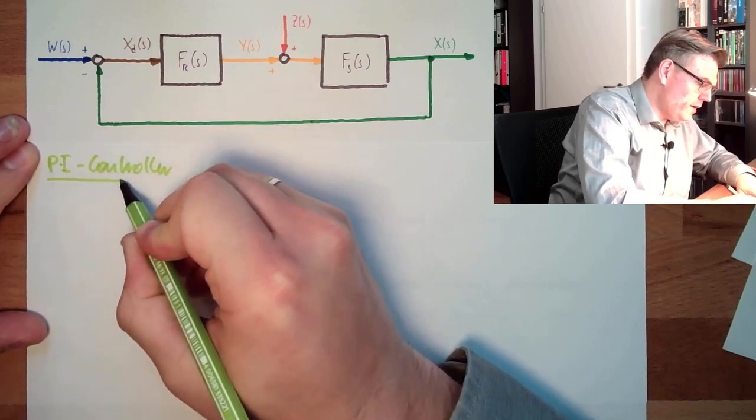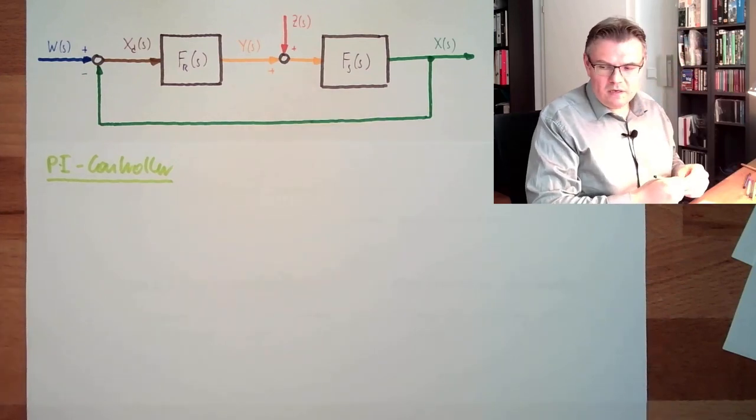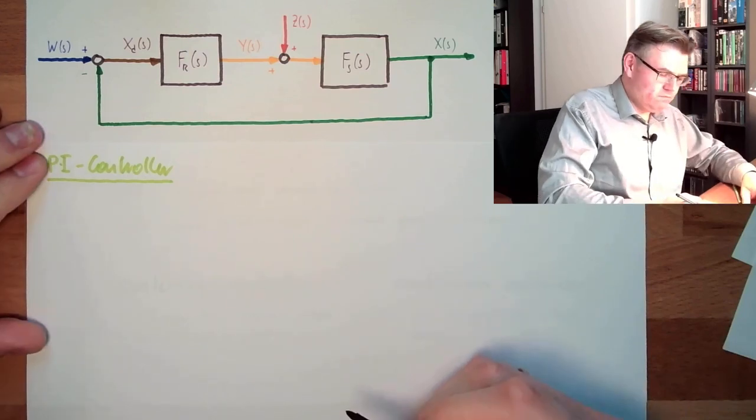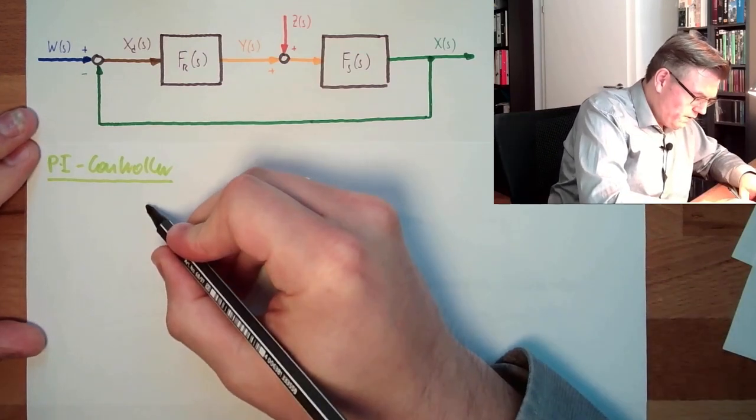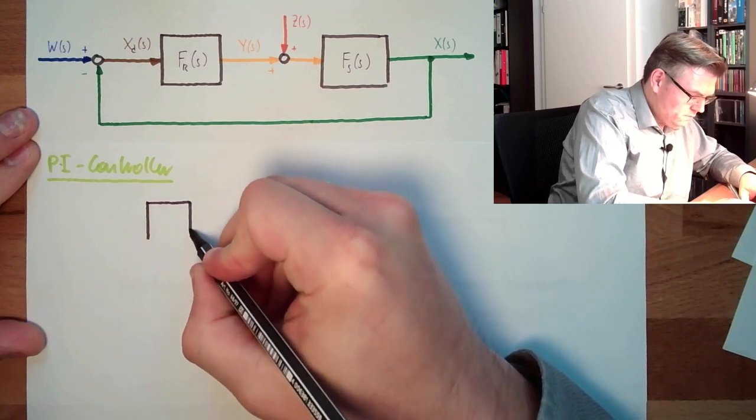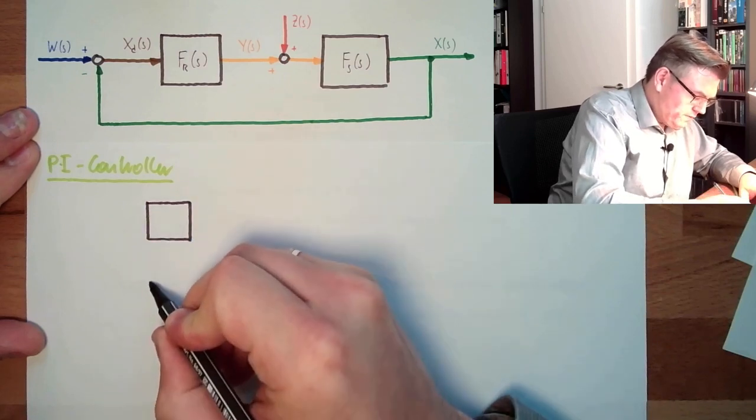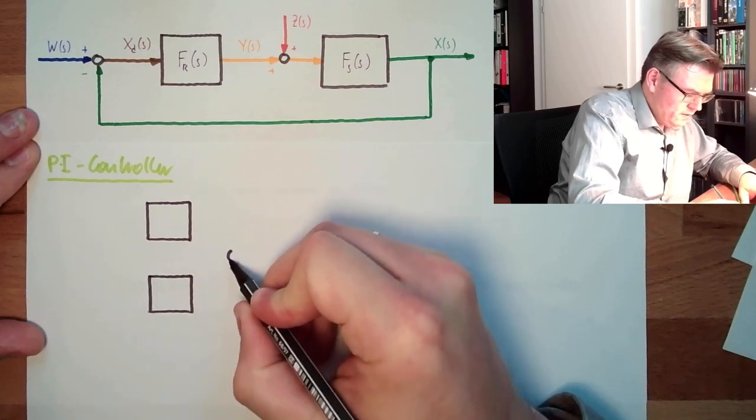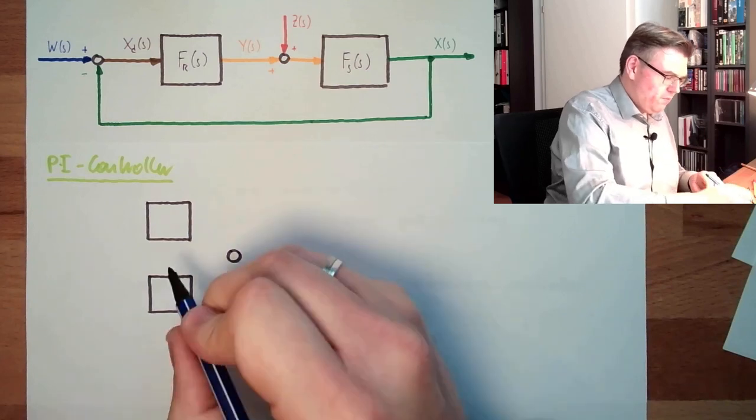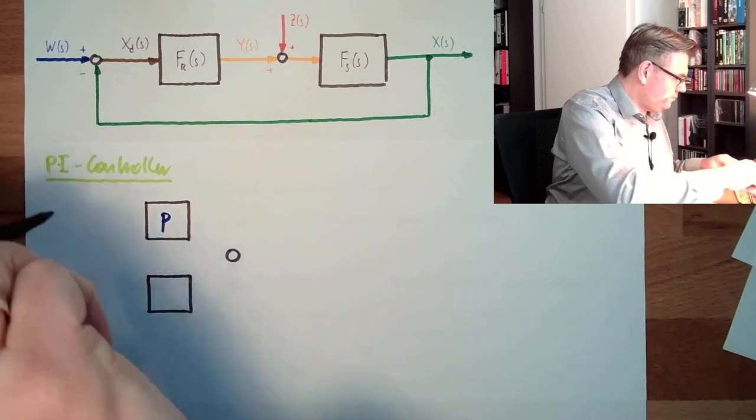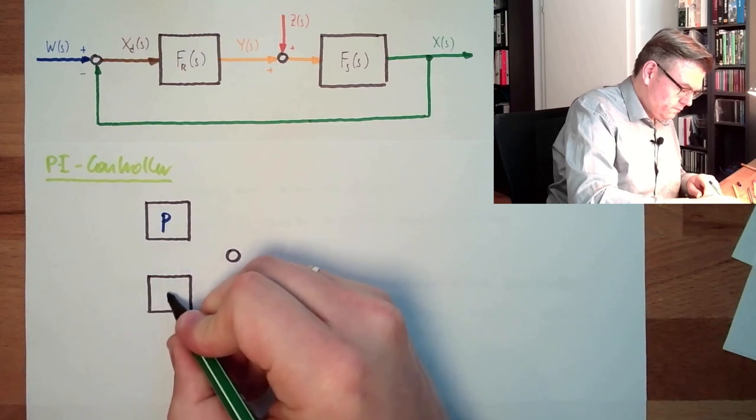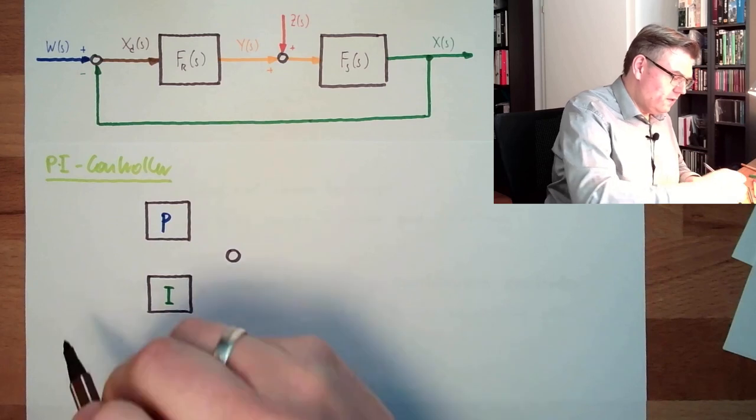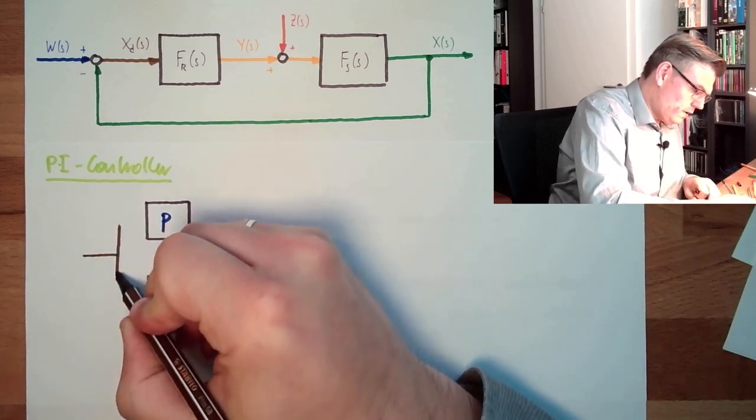So actually a PI-controller is pretty much a parallel of a P and an I-controller. So we have somewhere here a P, we have somewhere here the I, and this is summarized. So we have here the P, we have here the I. The input is in both cases the deviation, controller deviation.